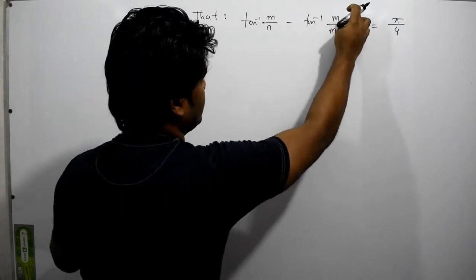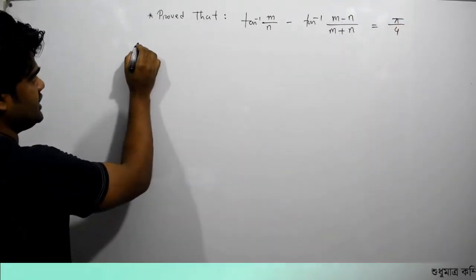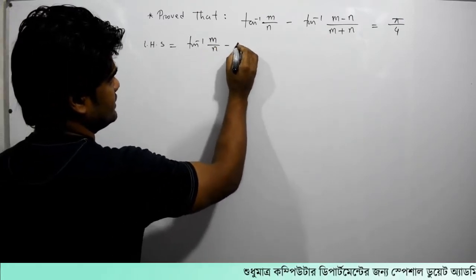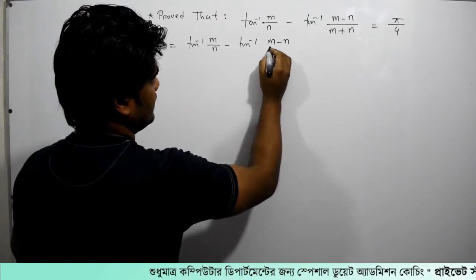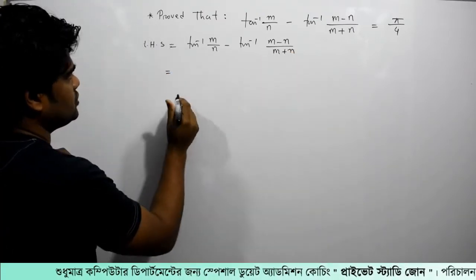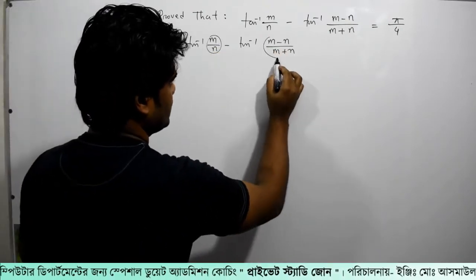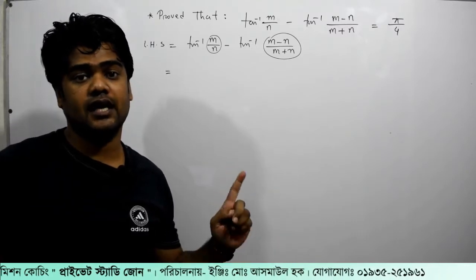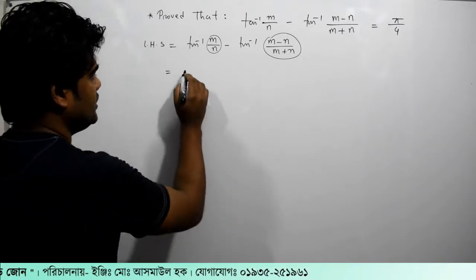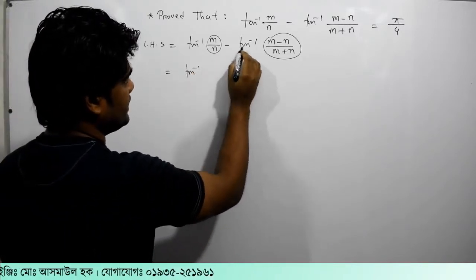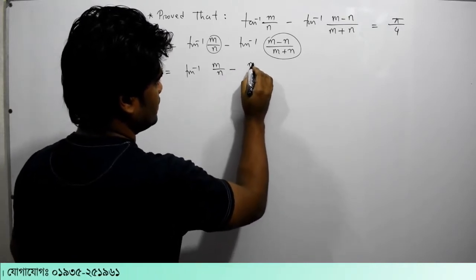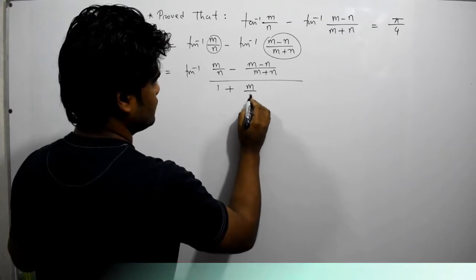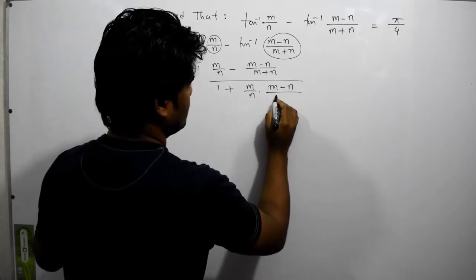We have a simple example to work out: tan inverse of (m minus n) divided by (m plus n). Using the tan inverse formula: tan⁻¹(x) minus tan⁻¹(y) equals tan⁻¹((x minus y) divided by (1 plus xy)), where x corresponds to m and y corresponds to n, giving us (m minus n) over (m plus n).